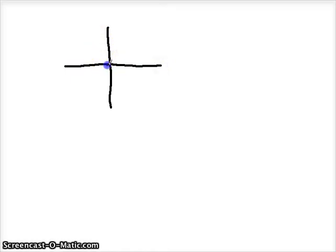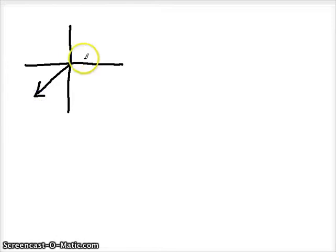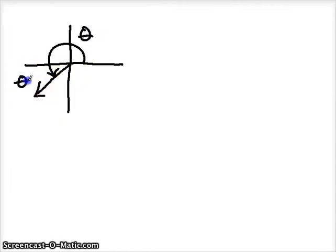But if we draw an angle whose terminal side lies in the second quadrant, then this is our original angle and this is our reference angle. The reference angle is the acute angle formed by the x-axis and the terminal side, and it's always going to be a positive value — so it doesn't matter what quadrant it's in. That's what a reference angle in the second quadrant would look like.